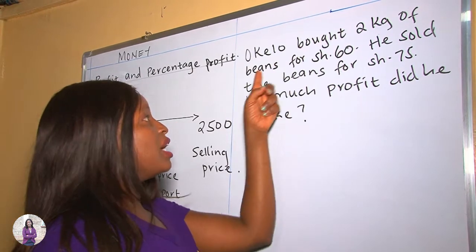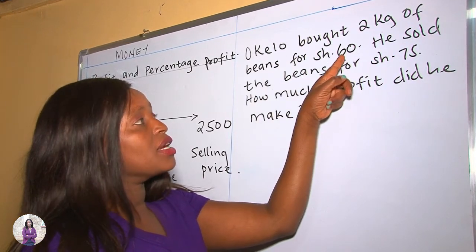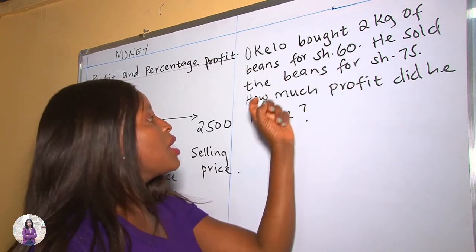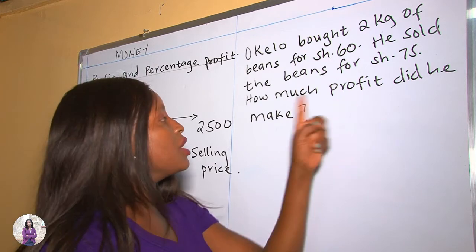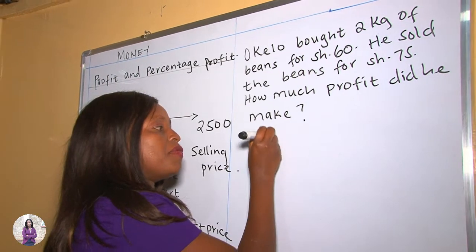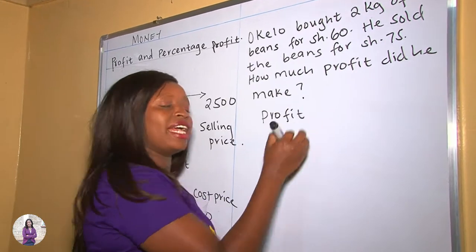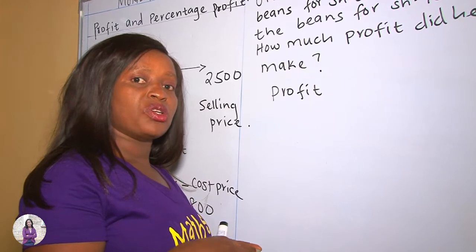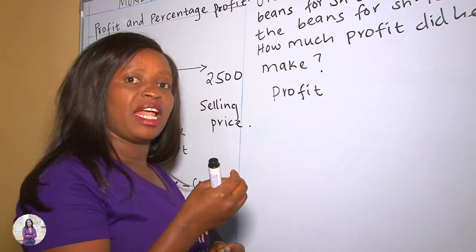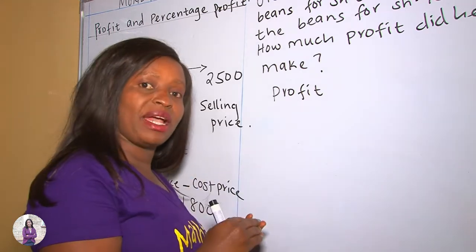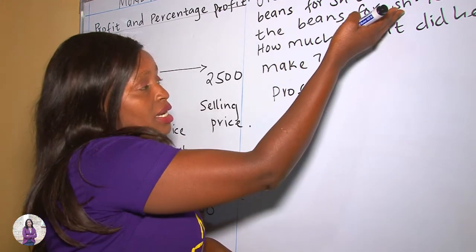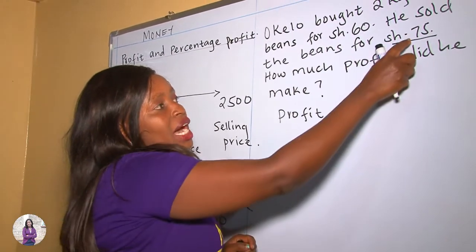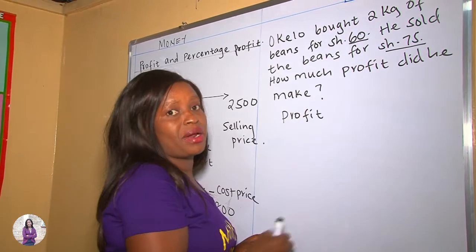In this example, we are told that Okina bought 2 kilograms of beans for 60 shillings. He sold the beans for 75 Kenyan shillings. How much profit did he make? We have said profit is the extra money that you make after making sales. He sold the beans at 75 shillings, which was a higher amount compared to the buying price.